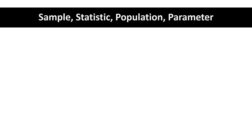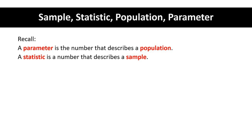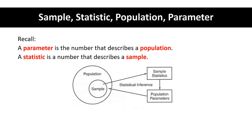Let's begin. A parameter is a number that describes a population — parameter starts with a P, population starts with a P. A statistic is a number that describes a sample — statistic starts with an S, sample starts with an S. These are important because we are going to start statistical inference, where we take a representative sample and from that sample infer about the bigger unknown population. We use sample statistics to estimate population parameters.